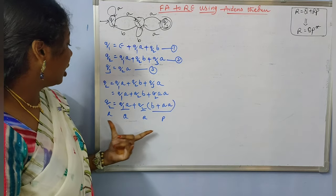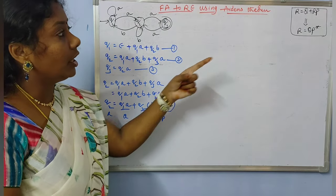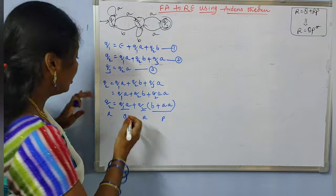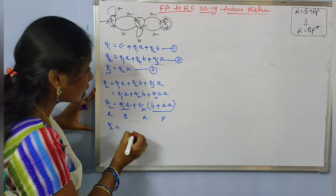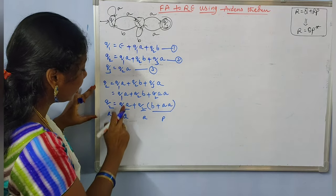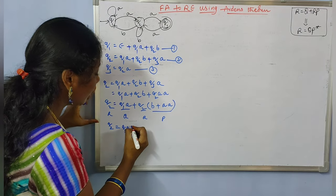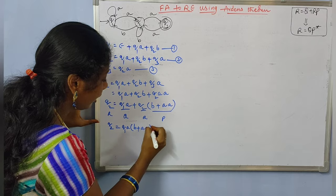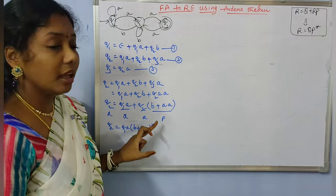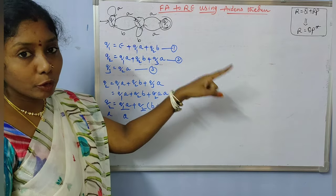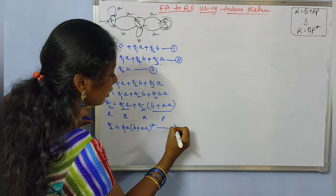Q2 is in the form of R = Q + RP. So according to Arden's theorem, we can write R = QP*. Applying this, Q2 = Q1·A·(B + AA)*. Let us say this is equation 4.